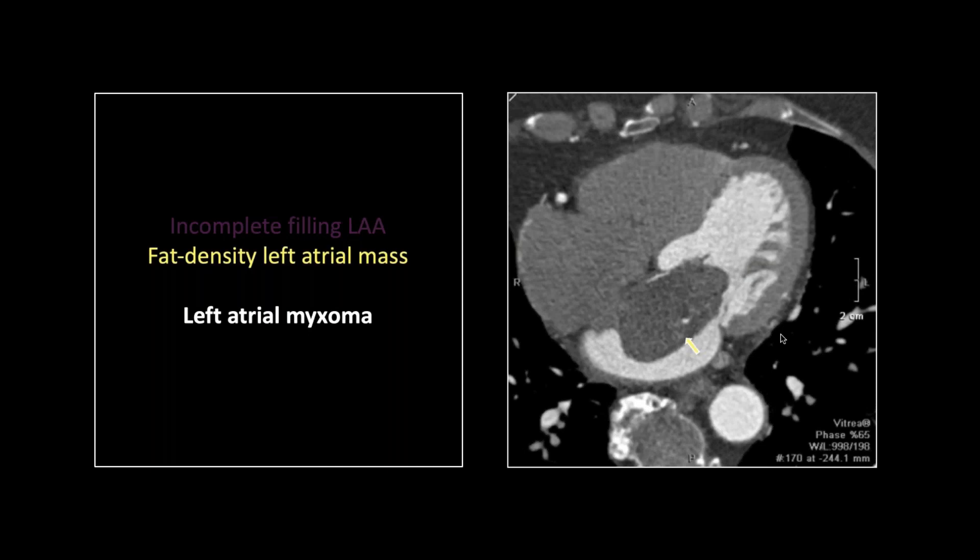So there's a huge fat density mass in the left atrium — that's where myxomas almost always occur. Note it's arising from the interatrial septum from a focal point, also very typical. So it doesn't look anything like the atrial septal fatty infiltration we saw earlier. Fat is fat in the heart and it's an easy mistake to make. There's a little focus of calcification, not uncommon in the larger myxomas. The other thing that I really love about this case is that thing sticking its nose down through the mitral valve.